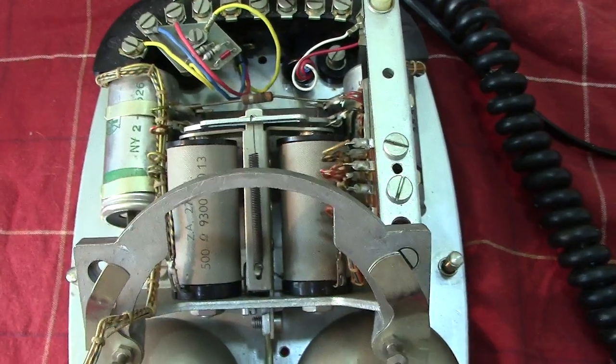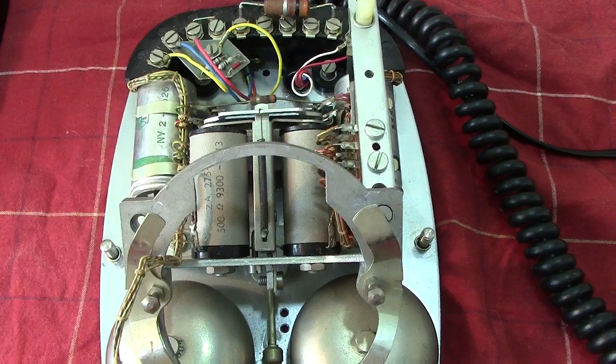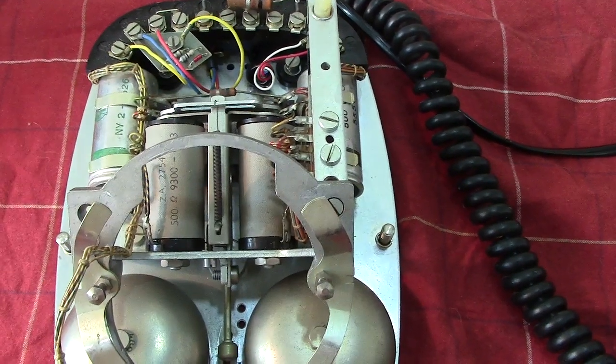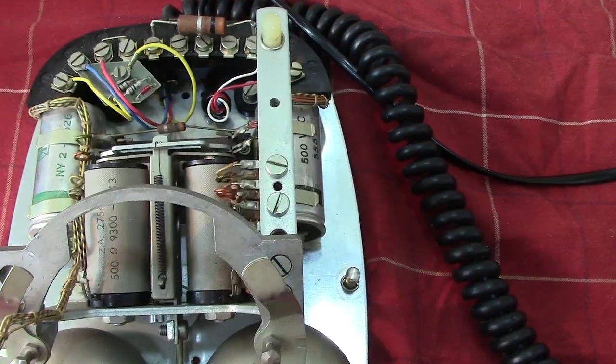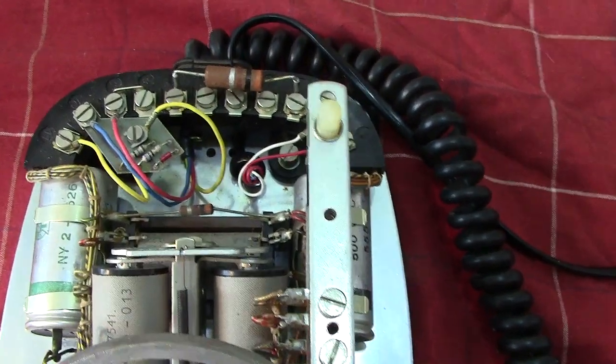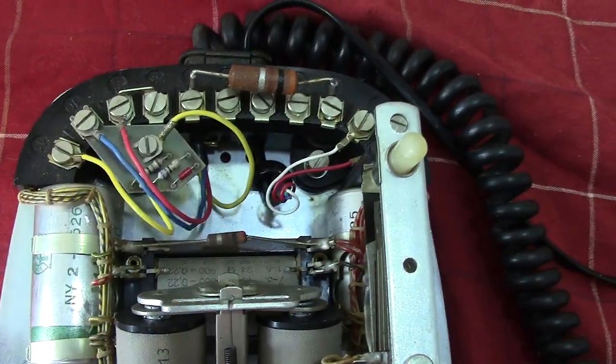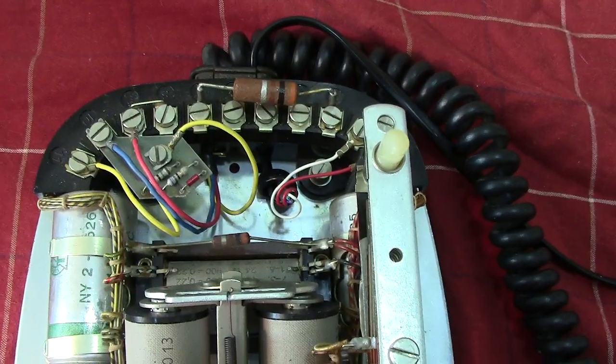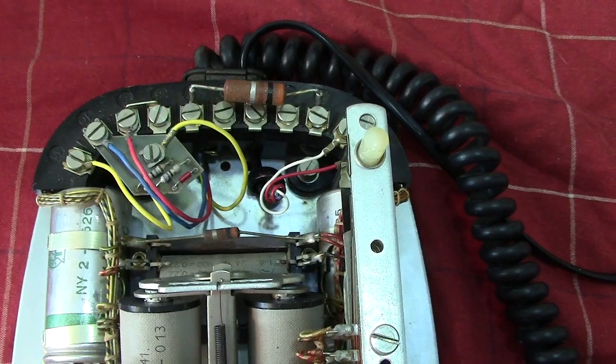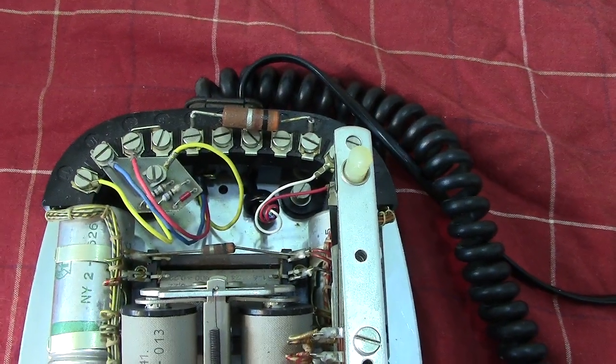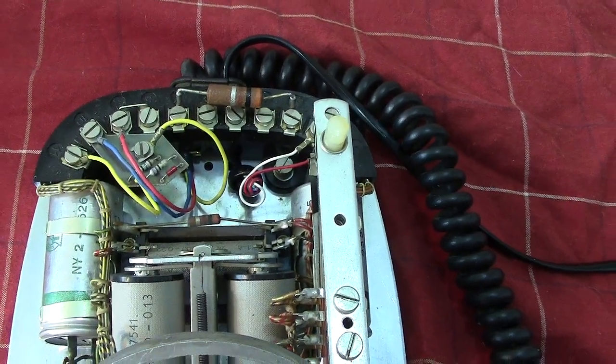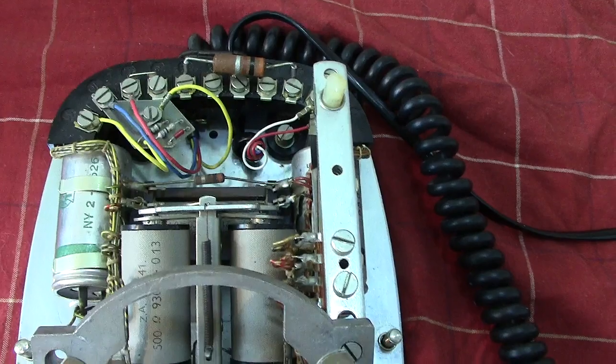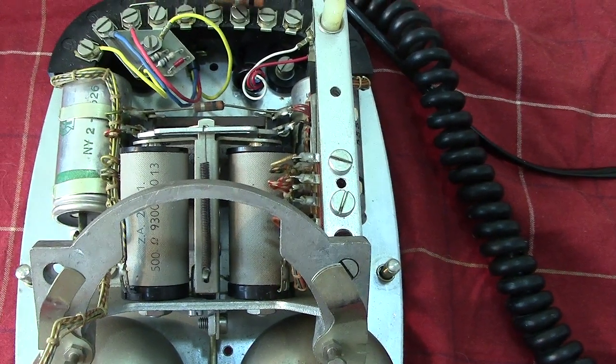It's I think well made, very strongly made. These are the cradle contacts. You've got two capacitors, one for the bell circuit and the other one possibly as a spark quench for the dial. They did use these in some places. Sometimes it's like two capacitors in one, but in this case it is two separate capacitors.